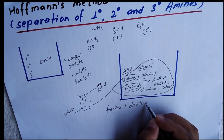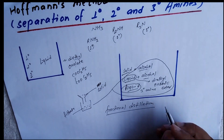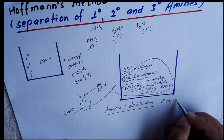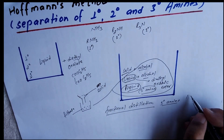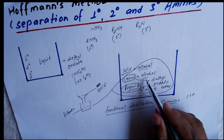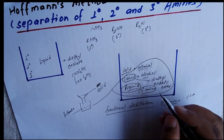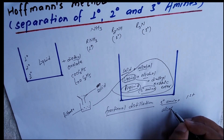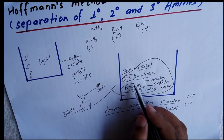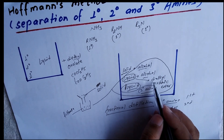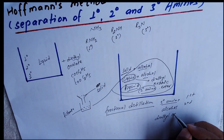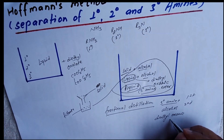After fractional distillation, the third degree amine is separated first. Then on further distillation we can separate alcohol second, and finally we separate dialkyl oxalamic ester.